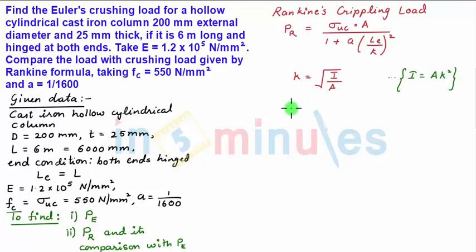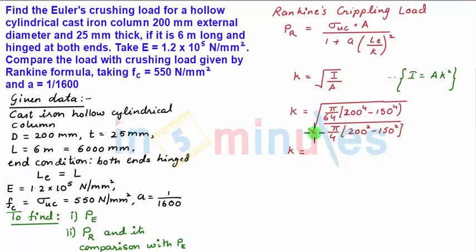First we determine the radius of gyration k, which equals square root of pi by 64 into 200 to the power 4 minus 150 to the power 4, upon pi by 4 into 200 square minus 150 square. We get k equals 62.5 mm.